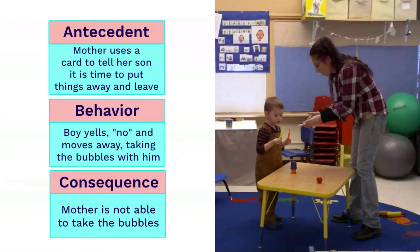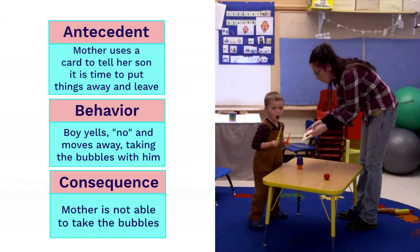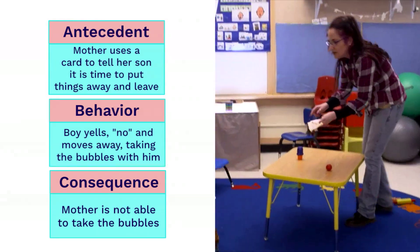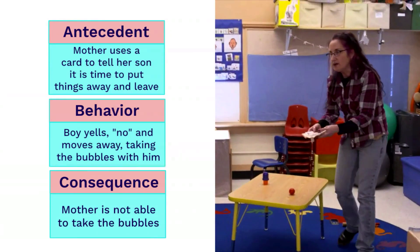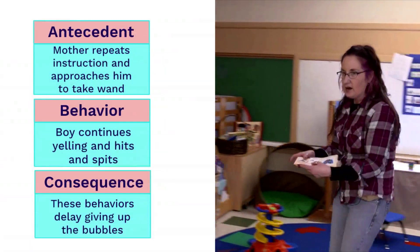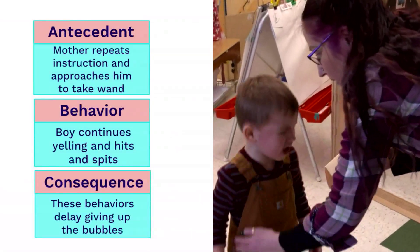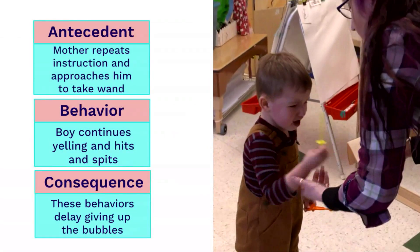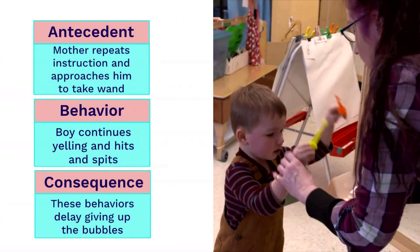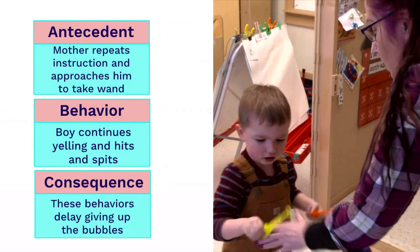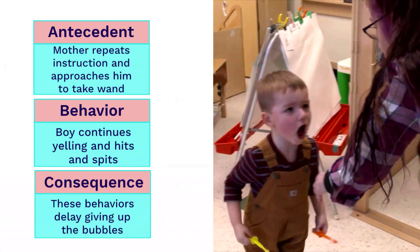The mother uses a card to tell her son it's time to put things away and leave. As soon as he sees the card, he begins yelling 'no' and moves away, taking the bubble wand with him. She repeats the instruction, and he continues saying no and screaming. When she approaches him to take the wand, he hits her and spits, further delaying giving up the wand.